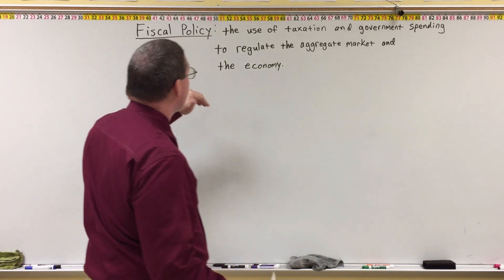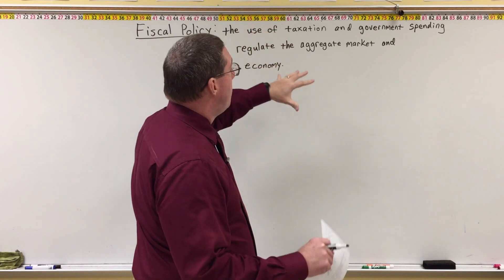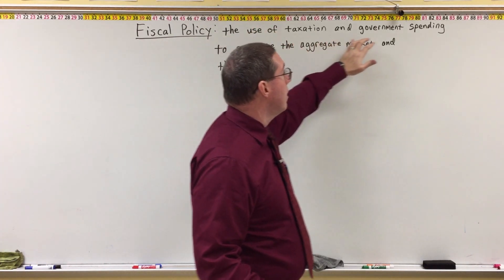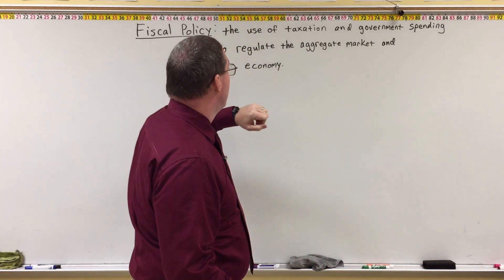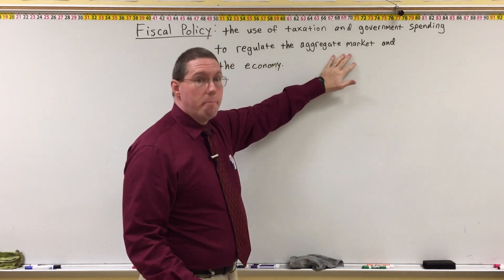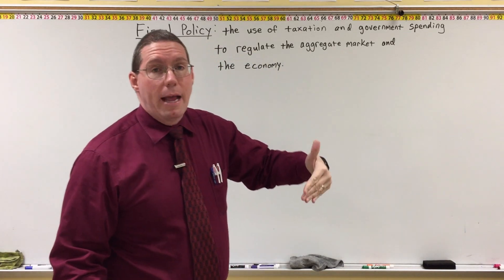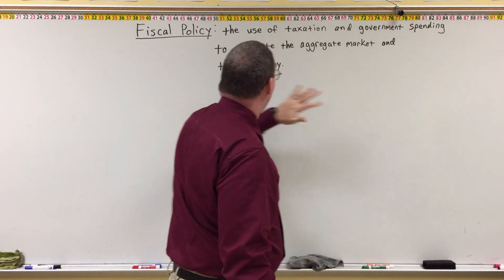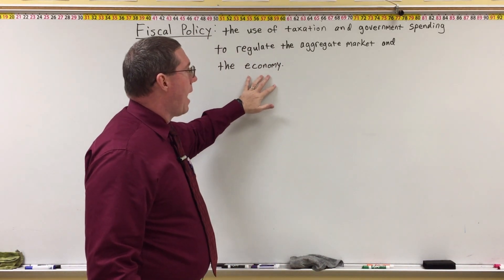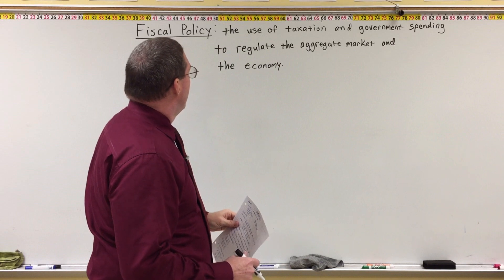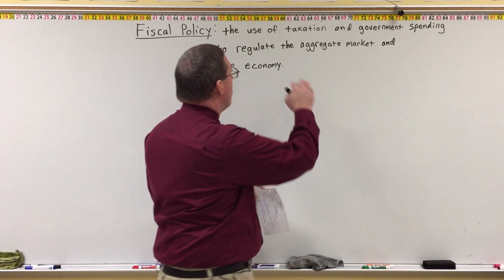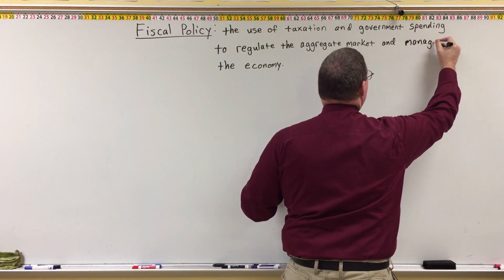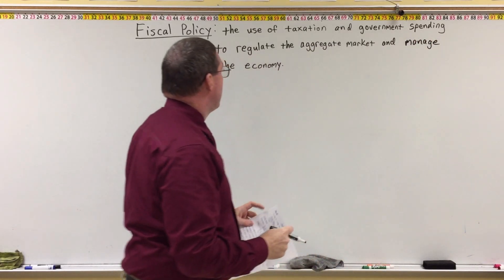What Congress does is use their ability to increase and decrease taxes and to increase and decrease government spending to regulate the aggregate market — mainly, they're regulating aggregate demand. And in that way, they're managing the economy.